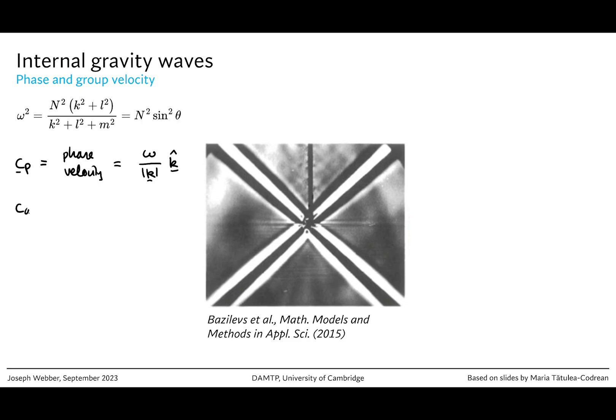The group velocity, cg, is an entirely different thing altogether. This here is d omega by dk. The phase velocity is crest propagation velocity. And the group velocity is the energy propagation velocity. Or if you have a wave packet, it's the velocity at which that wave packet propagates.